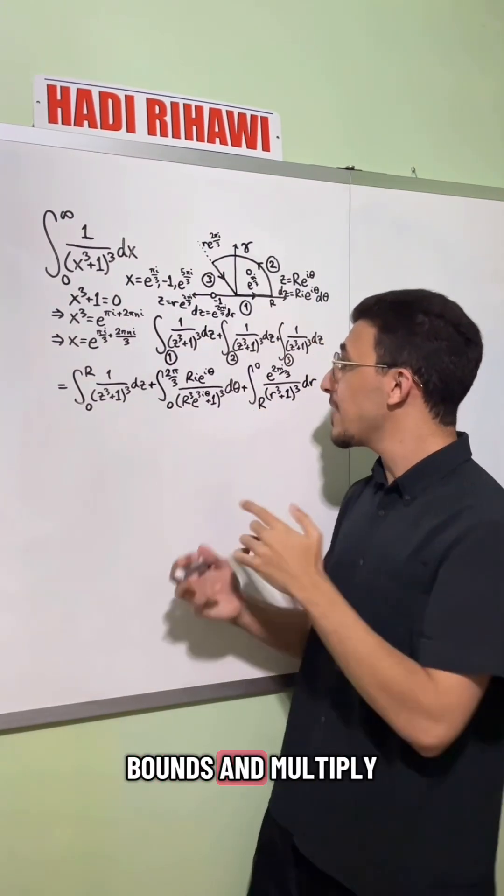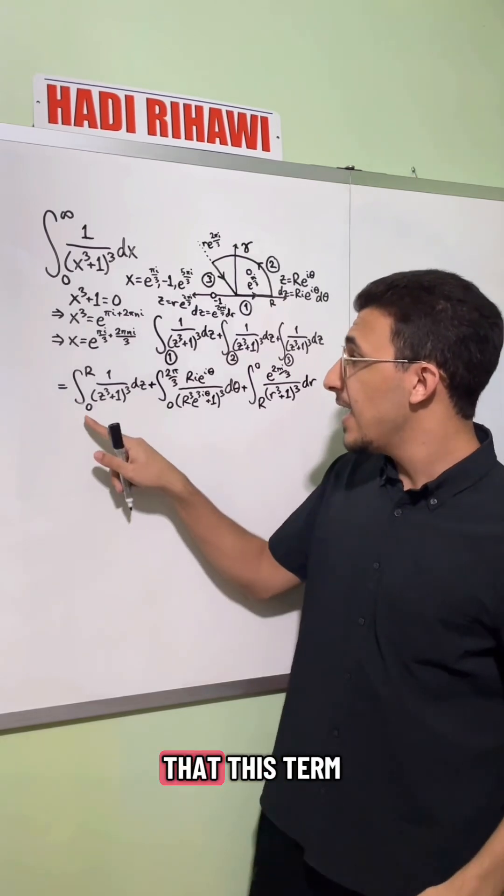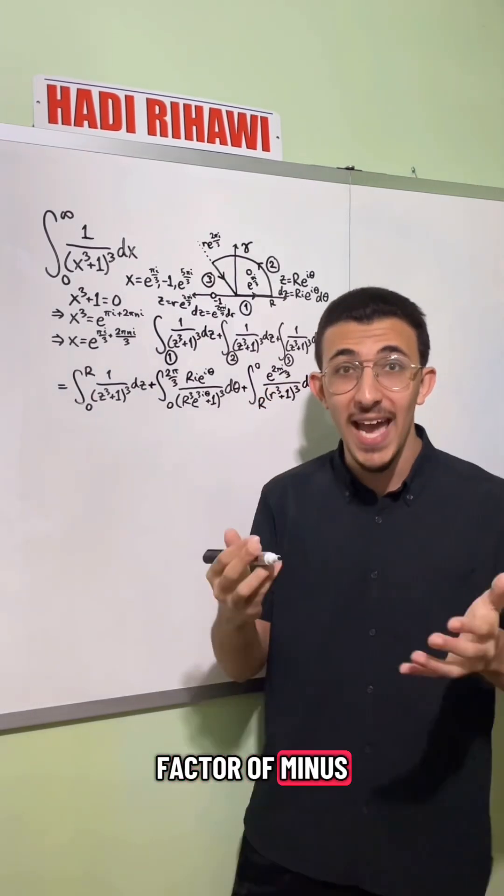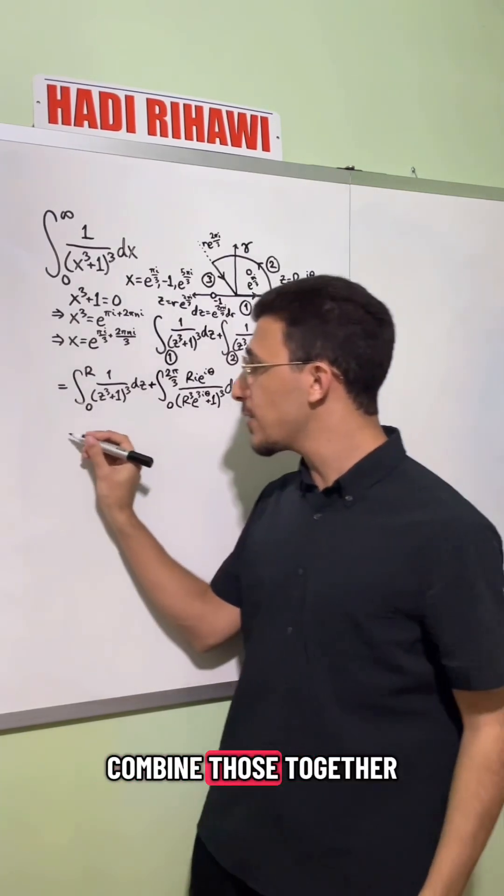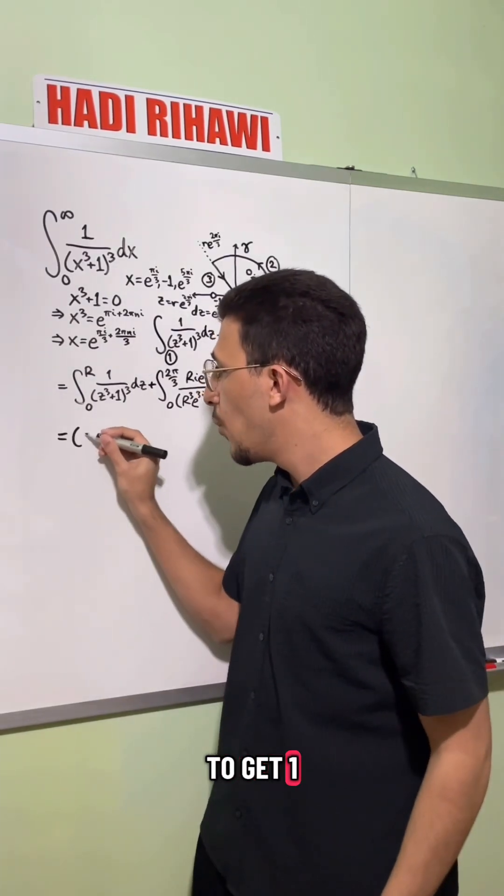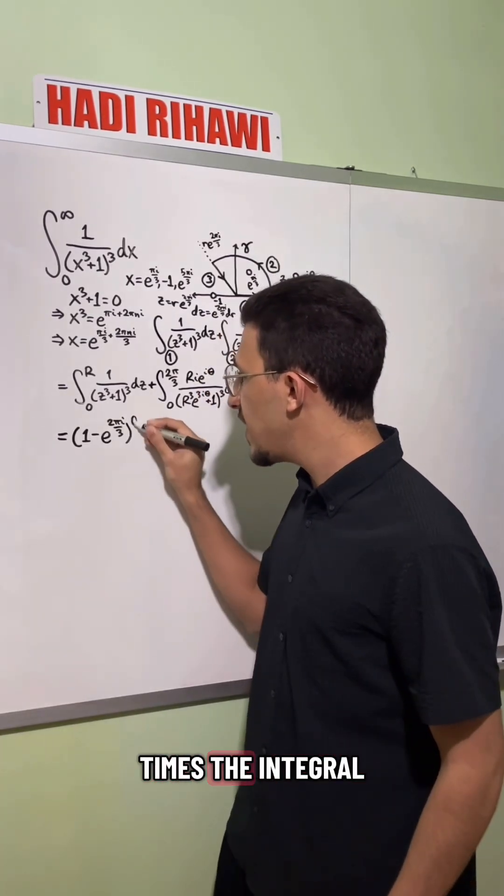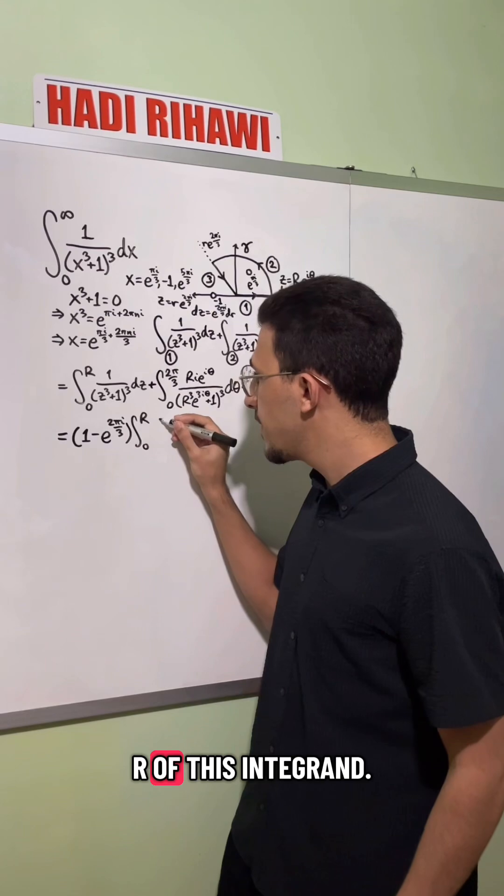Now we could swap these two bounds and multiply by negative. And we'll see that this term is very similar to this term. This one just having an extra factor of minus e to the two pi i over three. So we can combine those together to get one minus e to the two pi i over three times the integral from zero to r of this integrand.